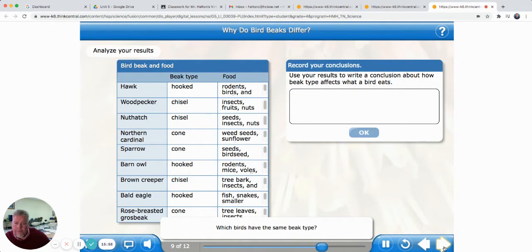Look at the data you collected. Which birds have the same beak type? Do the birds with common beak types eat the same food? Use your results to write a conclusion about how beak type affects what a bird eats. Type your answers in the box, then click OK. All right. So let's take a look at this. So first of all, we noticed as we were doing this, the hooked beak means that kind of bird is going to eat another animal. The chisel and the cone beak, they don't eat other animals. Only the hooked beak birds eat other animals. So that's one thing that we see.